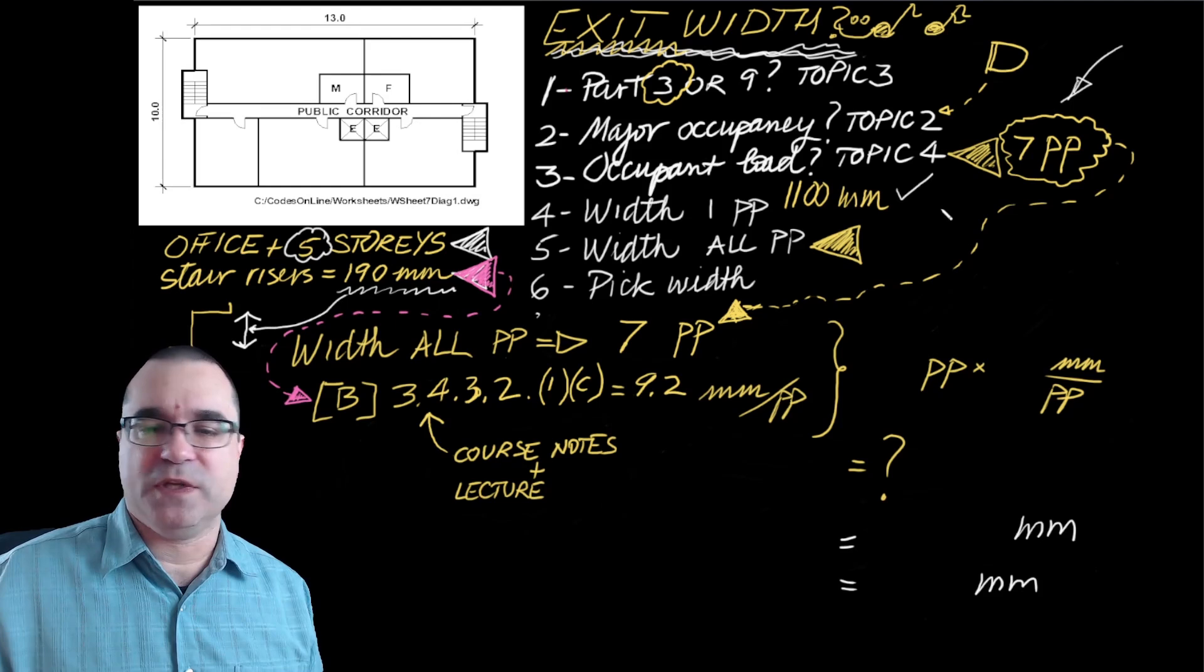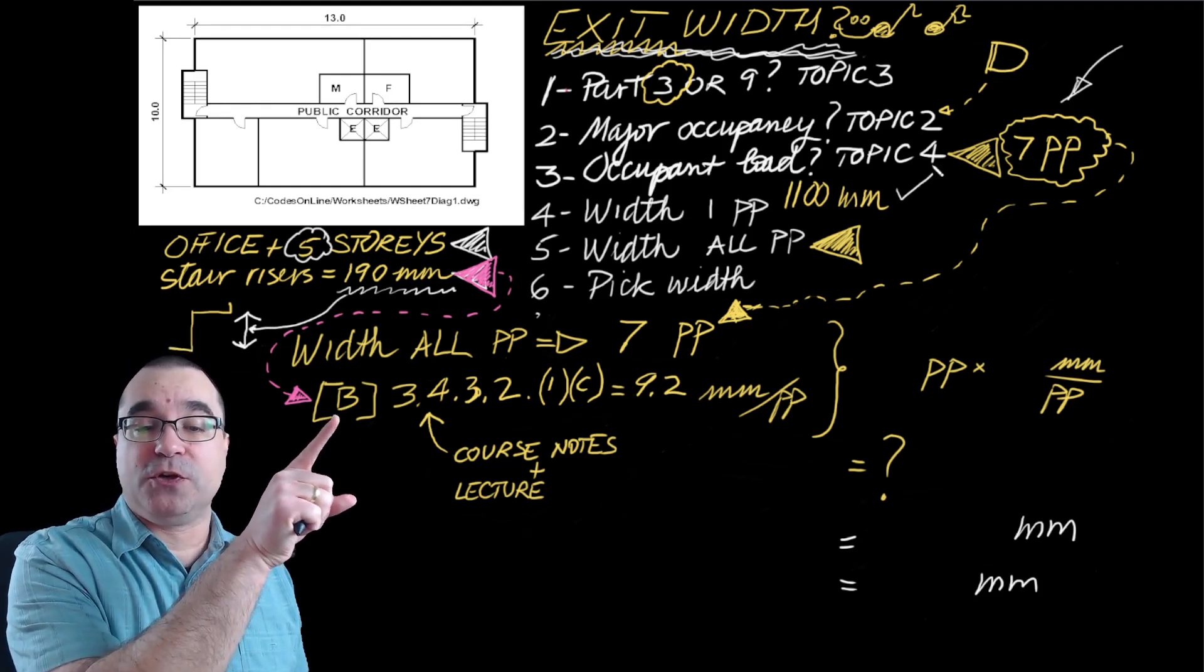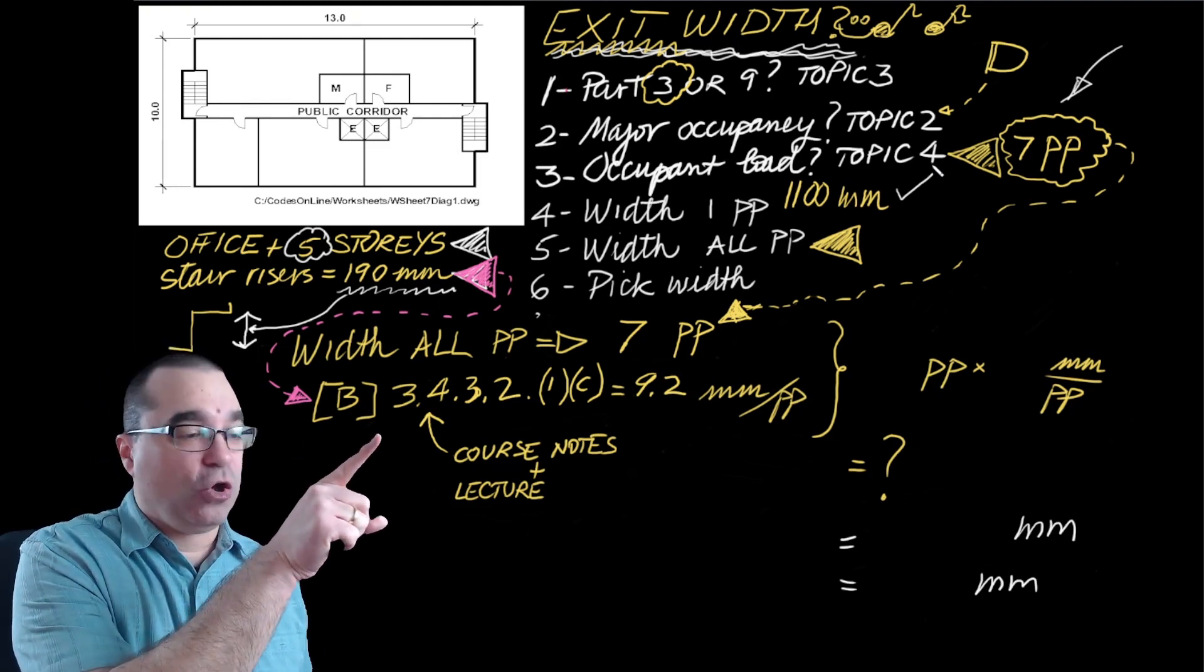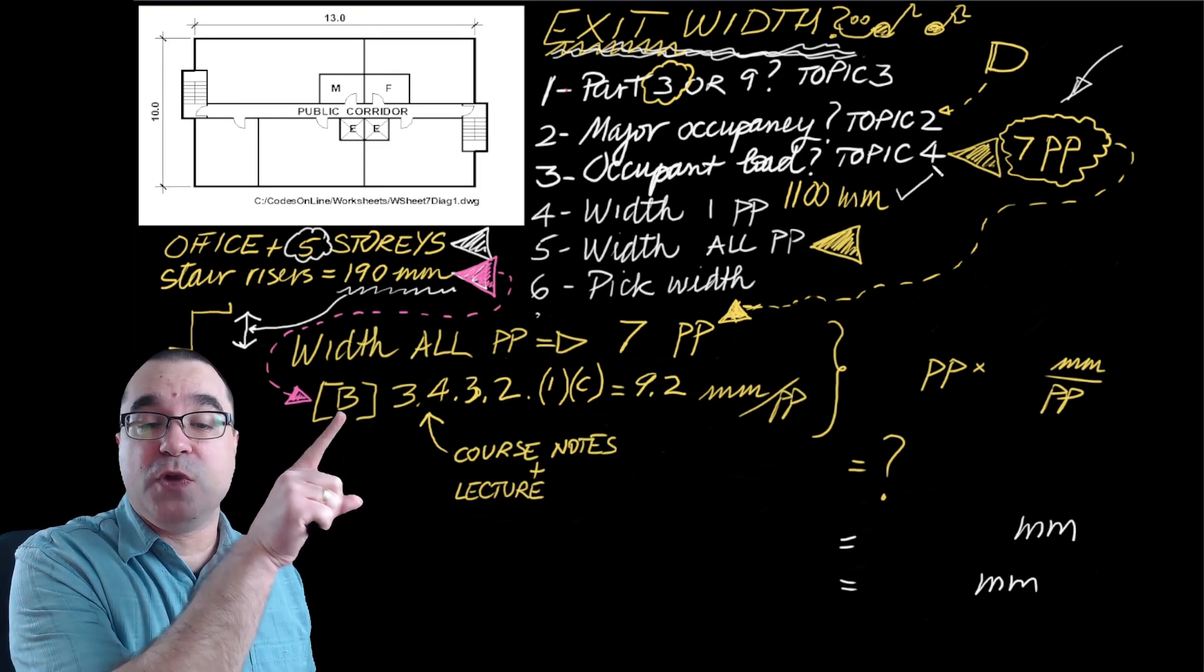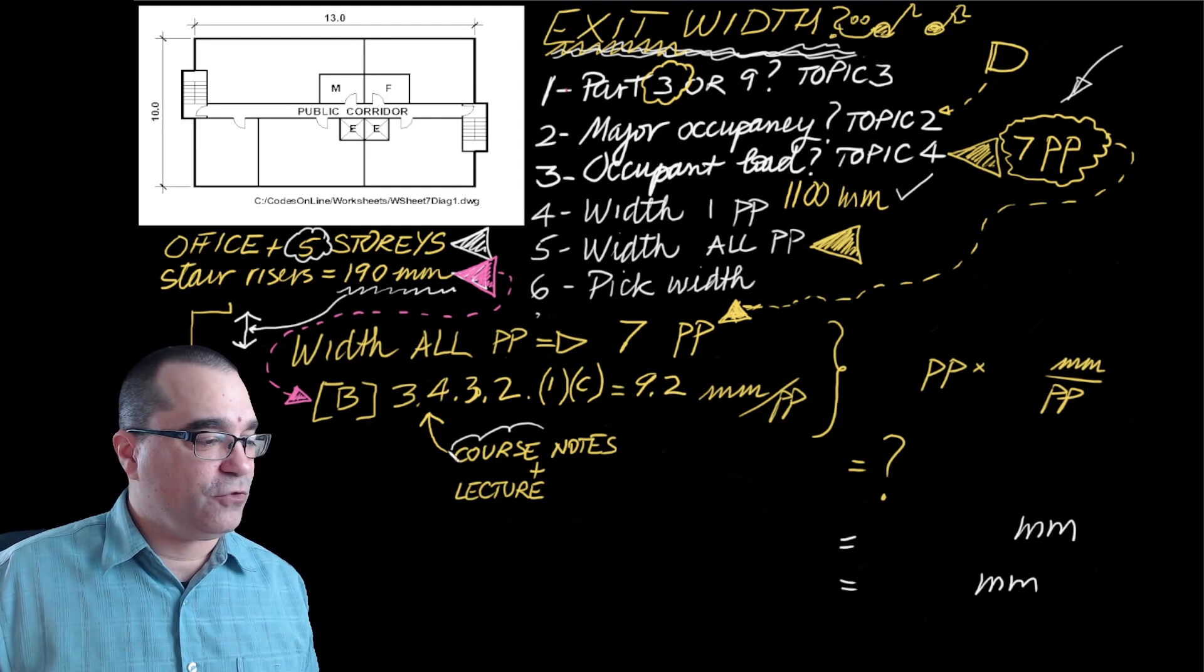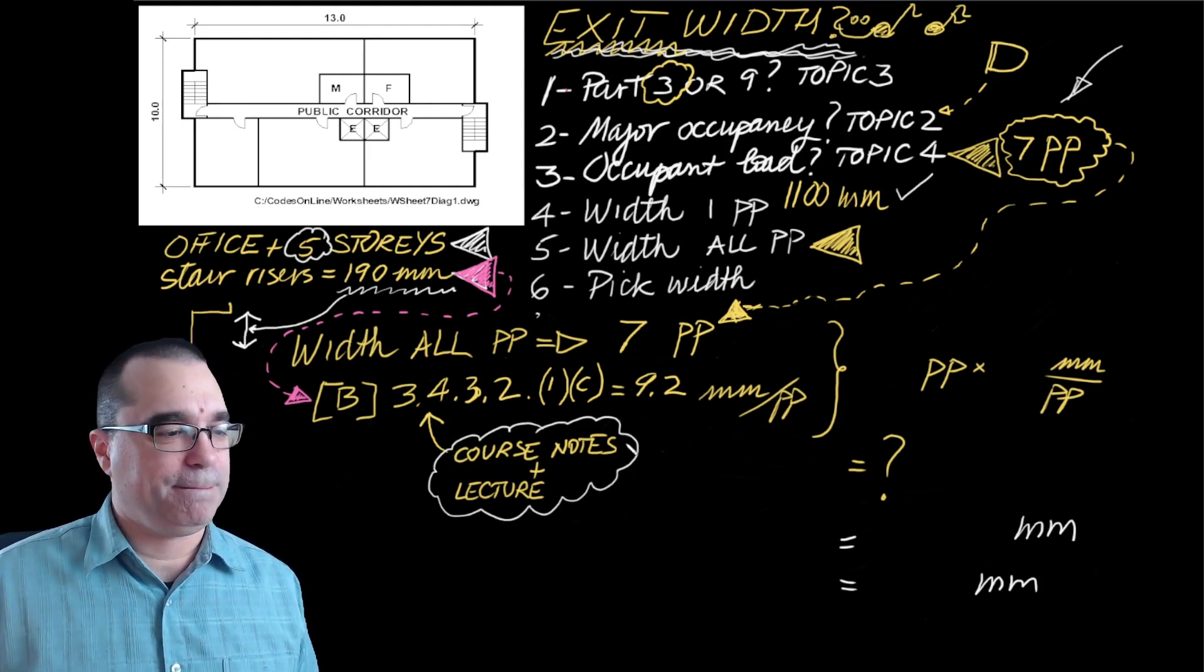We've already identified what the minimum width is for one person, and the appropriate portion of the Ontario Building Code where we get this relevant information is Clause 3.4.3.21c under Division B of the Ontario Building Code. You got that information from the lecture video and the course notes that are attached to them.